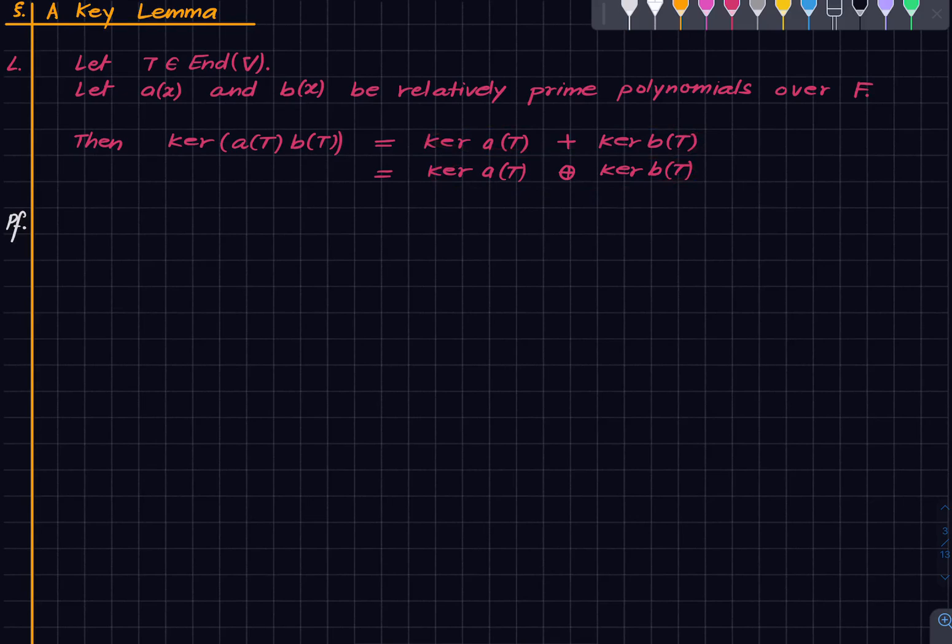First we will prove this part and then we will discuss what about that. So to prove this part, what we really need to show is that the intersection of kernel a(T) and kernel b(T) is trivial. So fix something in the intersection and our goal is to show that this is zero.